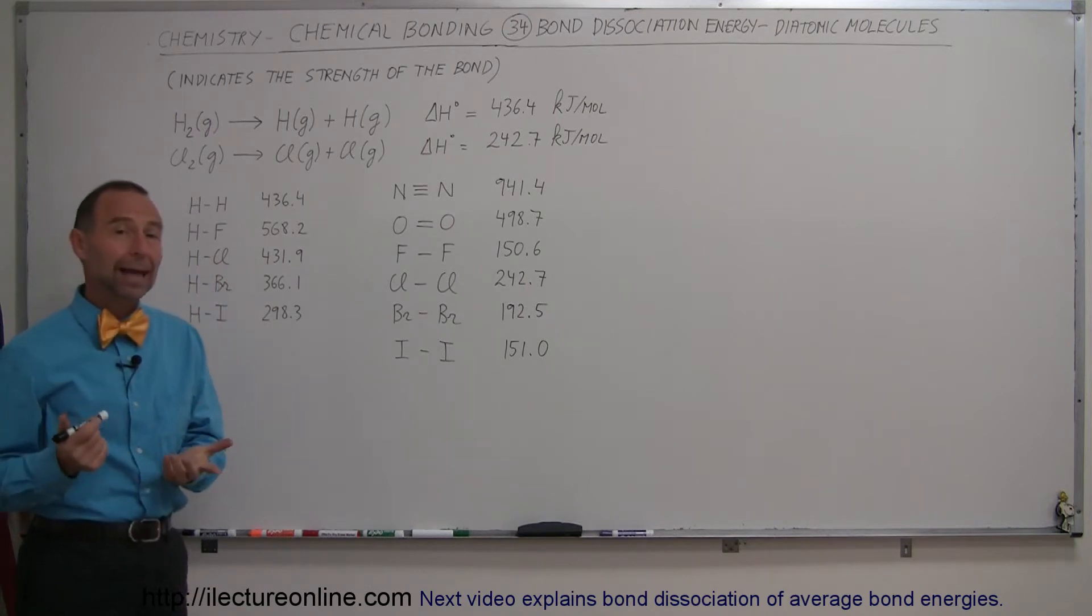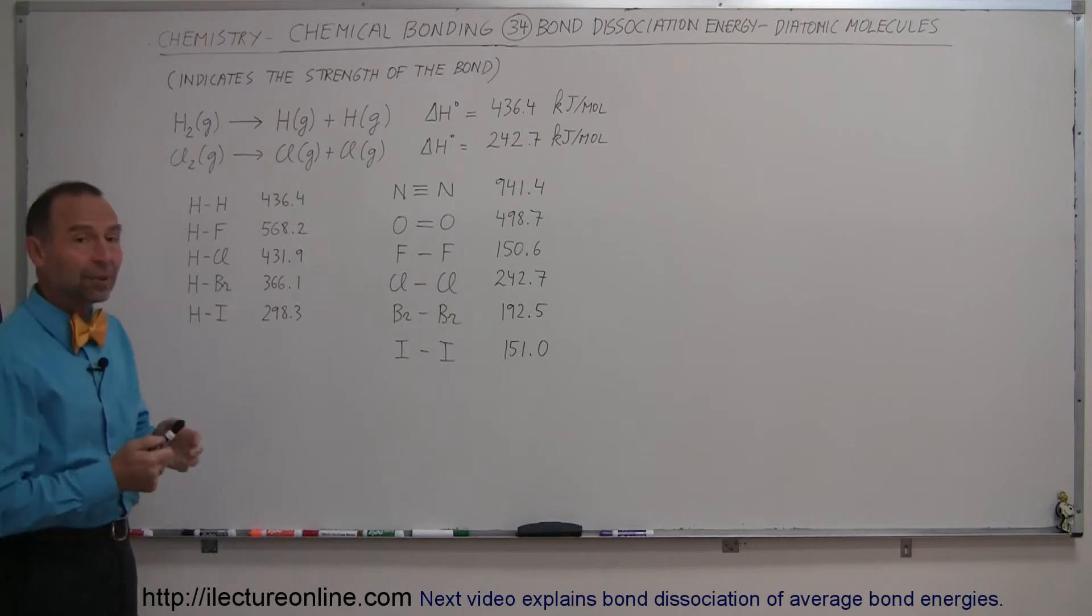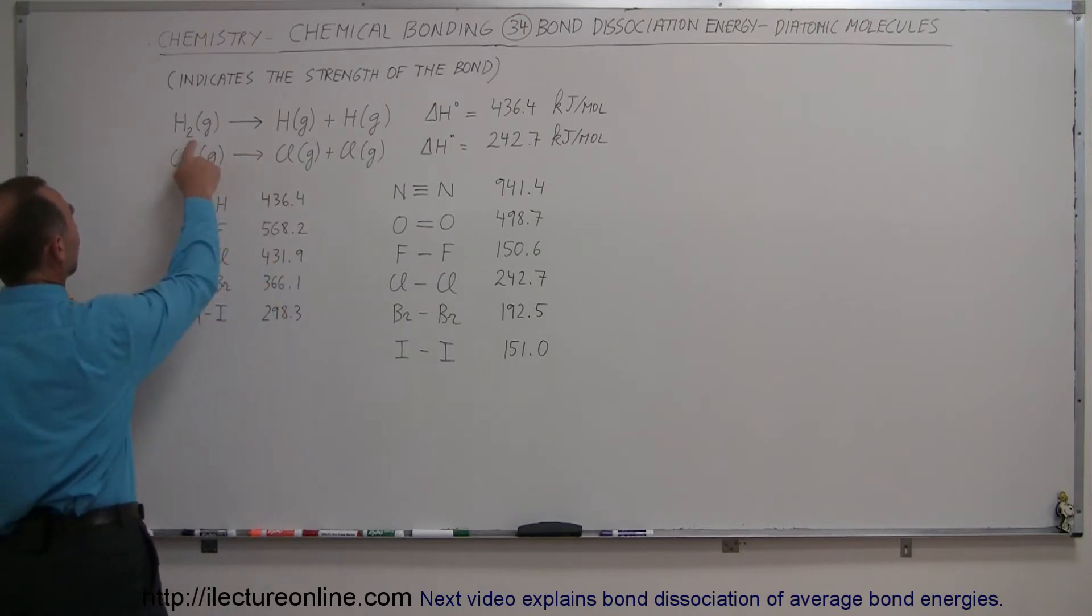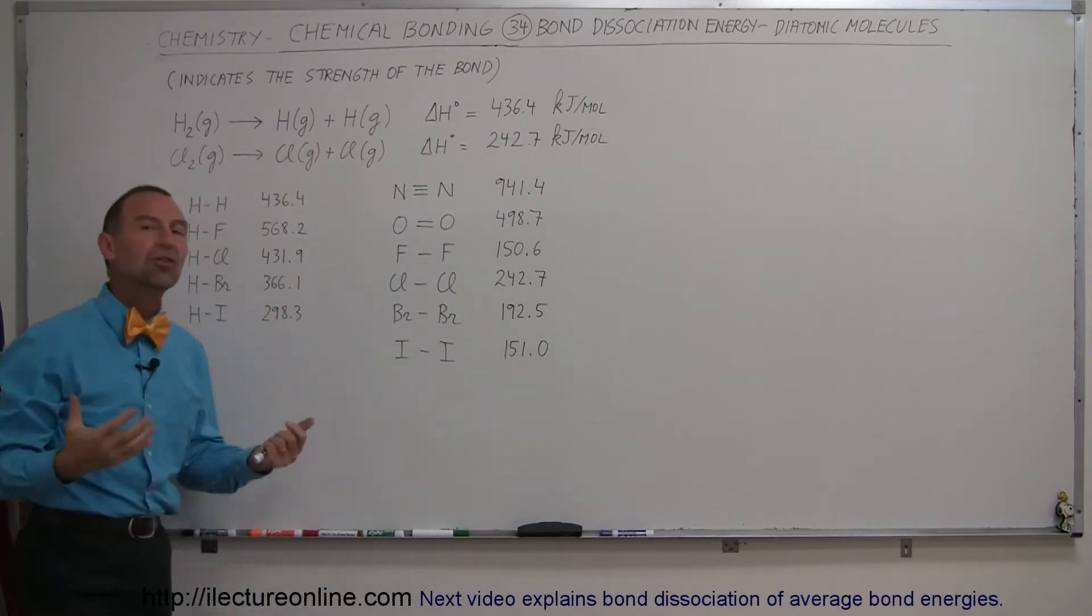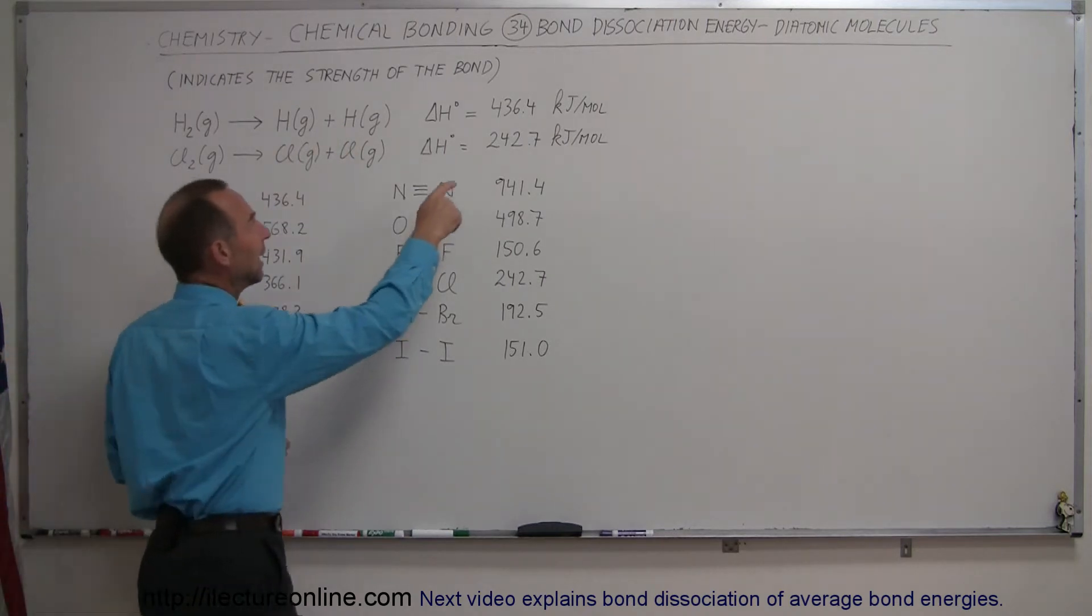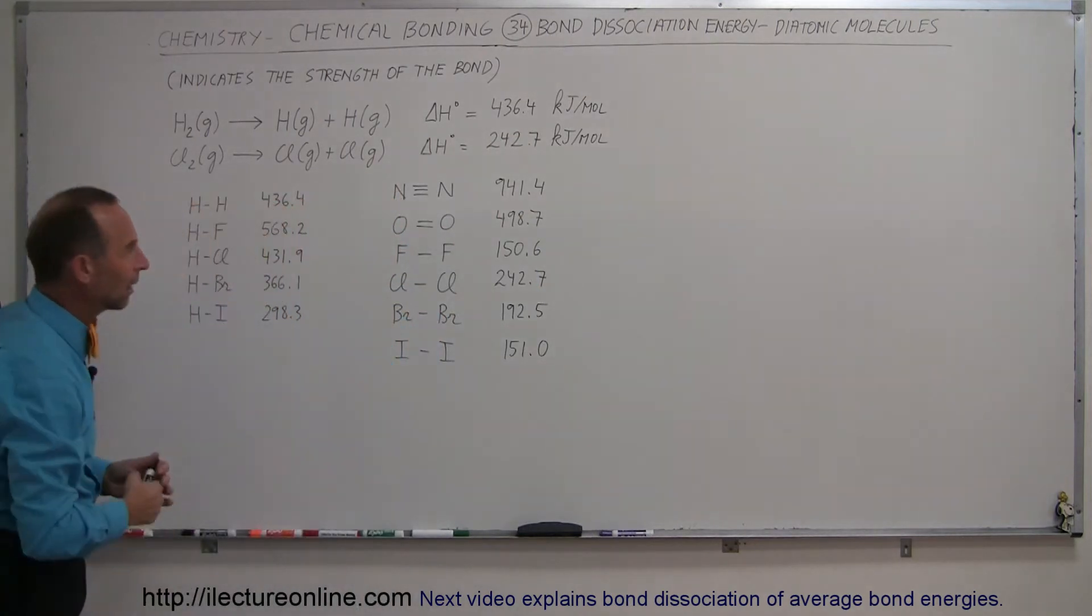The first type of bond we're going to look at is the diatomic molecules. As an example, let's say we have a hydrogen gas molecule, H2, and we want to separate those two into two separate hydrogens. How much energy does that take? It takes 436.4 kilojoules per mole of that gas.